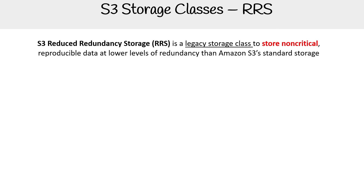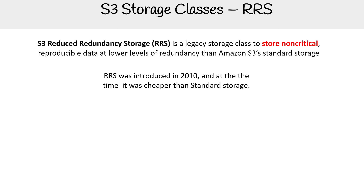Reduced Redundancy Storage (RRS) is a legacy storage class to store non-critical, reproducible data at lower levels of redundancy than Amazon S3 standard storage. It was introduced back in 2010, and at the time it was cheaper than standard storage for that reduction in redundancy — which means that if there was an issue, you could end up losing your data. That's why they specify storing non-critical data.